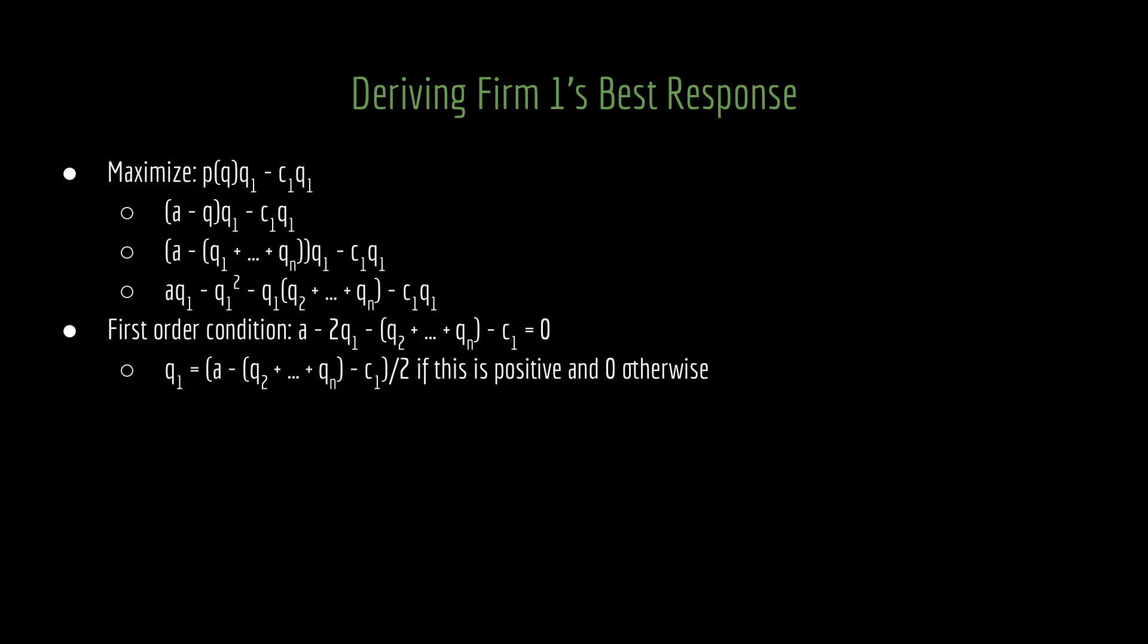If we do that and then we solve for q1, then we have firm 1's best response to a given set of other firms' productions. Specifically, firm 1 wants to produce (a minus q2 plus q3 plus q4 and so forth plus qn minus c1) divided by 2.